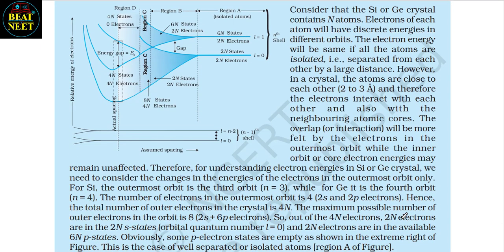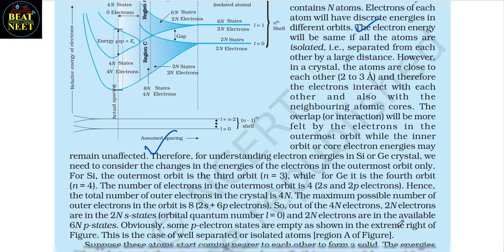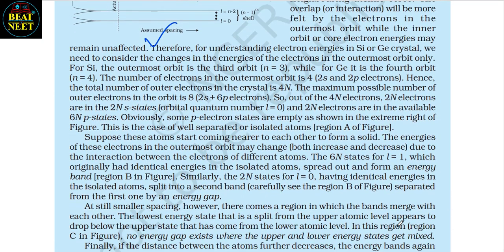Consider that the silicon or germanium crystal contains N atoms. Electrons of each atom will have discrete energies in different orbits. The electron energy will be the same if all the atoms are isolated (separated from each other by a large distance). However, in a crystal the atoms are close to each other (2–3 Ångströms), and therefore the electrons interact with each other and also with the neighboring atomic cores. The overlap or interaction will be more felt by the electrons in the outermost orbit, while the inner orbit or core electron energies may remain unaffected. Therefore, for understanding electron energies in silicon or germanium, we need to consider the changes in the energies of electrons in the outermost orbit only.